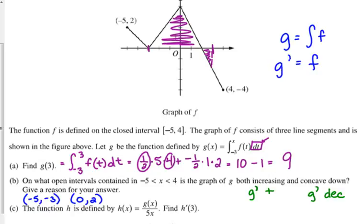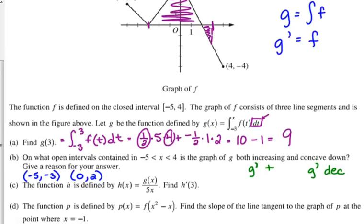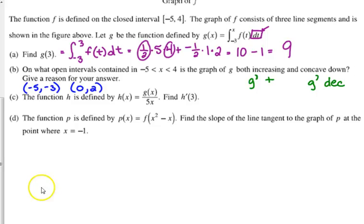And the reason that they give, and you should usually, questions like this, you should write in words. You can see exactly how they have it phrased on the back of the page. They say the graph of G is increasing and concave down on the intervals from negative 5 to 3 and 0 to 2 because G prime equals F is positive and decreasing on these intervals. That's all you need. So you get one point for the answer. Even if you can't justify it, you still get that one point, and then you get one point for your justification. You all got to know those relationships between the function and its derivatives.